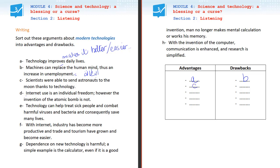Next, D: 'Internet use is an individual freedom. However, the invention of the atomic bomb is not.' So what do you think — is it an advantage or a drawback? Here we understand that modern technology or inventions such as the atomic or nuclear bomb are dangerous. There is a threat if we don't know how to use it. So this is a drawback.